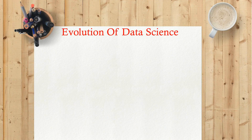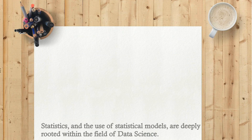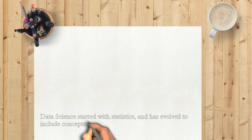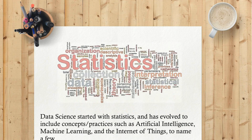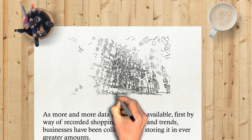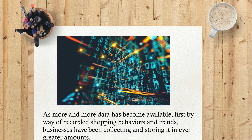The evolution of data science — statistics and the use of statistical models are deeply rooted within the field of data science. Data science started with statistics and has evolved to include concepts and practices such as artificial intelligence, machine learning, and the internet of things, to name a few. As more and more data became available, first by way of recorded shopping behaviors and trends, businesses have been collecting and storing it in ever greater amounts.